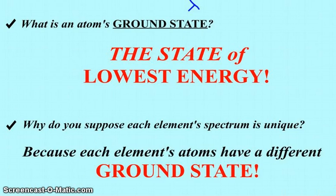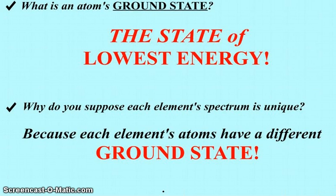Why do we suppose that is so? Well, because every element, every element's atoms, has a different ground state. No element has the same amount of electrons as another element. And so, since there's a different ground state, there'll be different jumps, those quantum leaps, that these electrons will take. And so, we'll see different patterns of light coming out of them.